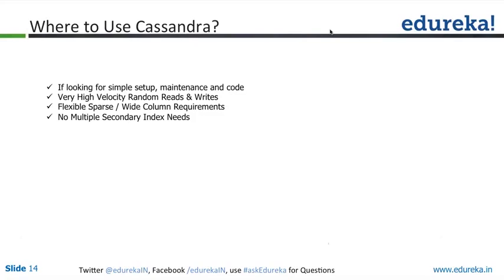Cassandra naturally is a simple setup, maintenance, and code because when it comes to maintenance of Cassandra, the administrator has to do nothing — most things are automatically done. If you want to scale up or scale down, remove a node or add a new node, it's very fast in Cassandra because it provides a simple tool for that. You don't have to worry about re-syncing, re-balancing, or distribution of data. It provides very high velocity of random reads and writes compared to other NoSQL systems because of its columnar storage capability and distributed decentralized architecture.